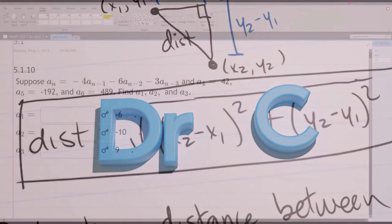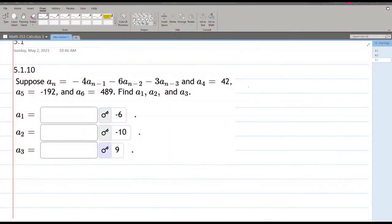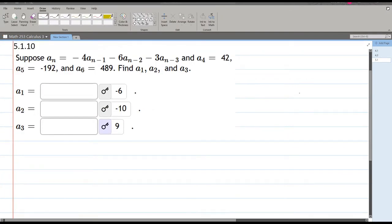This is an algebra question that we have here, and the tricky part on this is the notation. So they give us information about a4, 5, and 6, and they want to know about a1, 2, and 3. And they also give us the relationship of an to 3 previous terms.